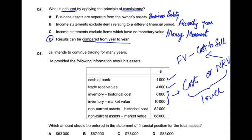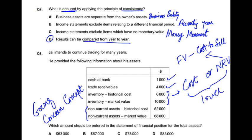अब बारी आई non-current assets की — यहां थोड़ी game मुश्किल है। यहां एक concept है जो कहलाता है going concern concept। Going concern का मतलब है business चलता रहेगा, business के बंद होने के कोई chances नहीं हैं। Example यह है कि हर साल management एक कसम उठाती है कि हम business को चलाएंगे और बंद करने का कोई chance नहीं है।